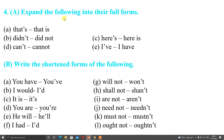Expand the following into their full forms: that's — that is; didn't — did not; can't — cannot; here's — here is; I've — I have. Write the shortened form of the following: you have, I would, it is, you are, he will, I had, will not, shall not, are not, need not, must not, ought not. All these words are having short forms.